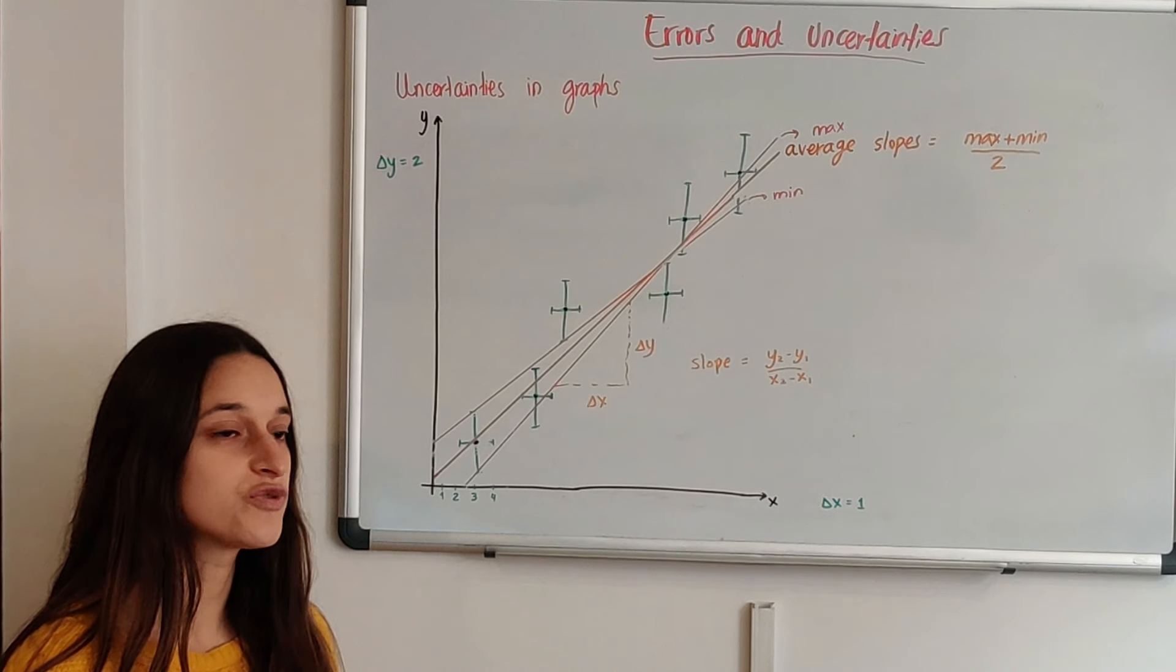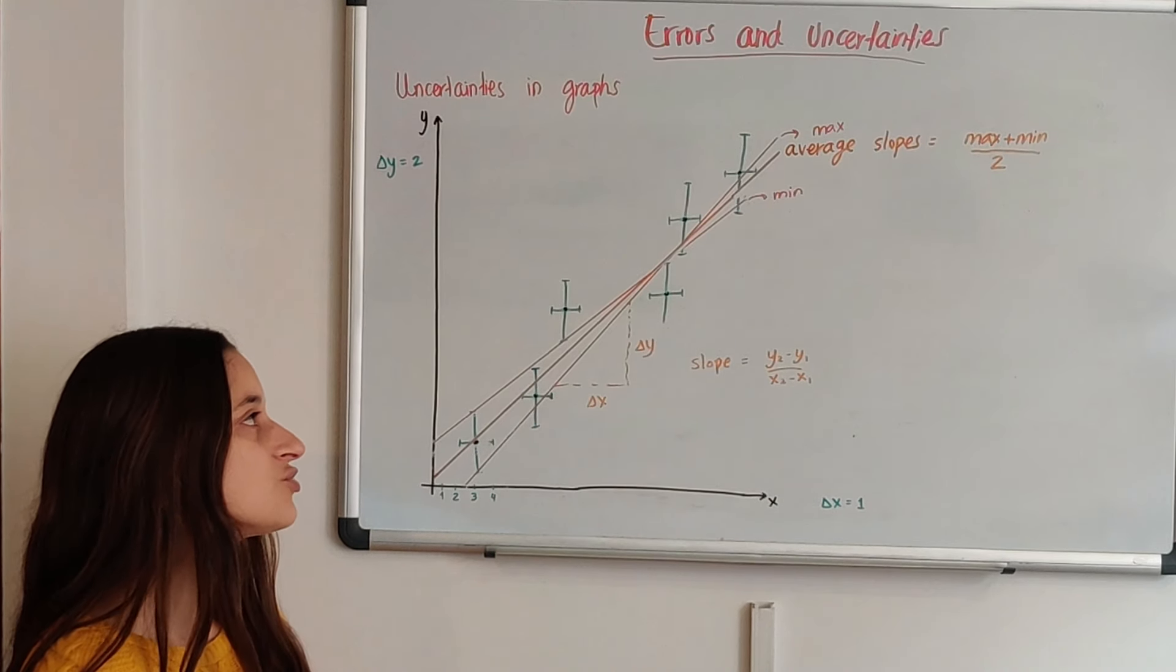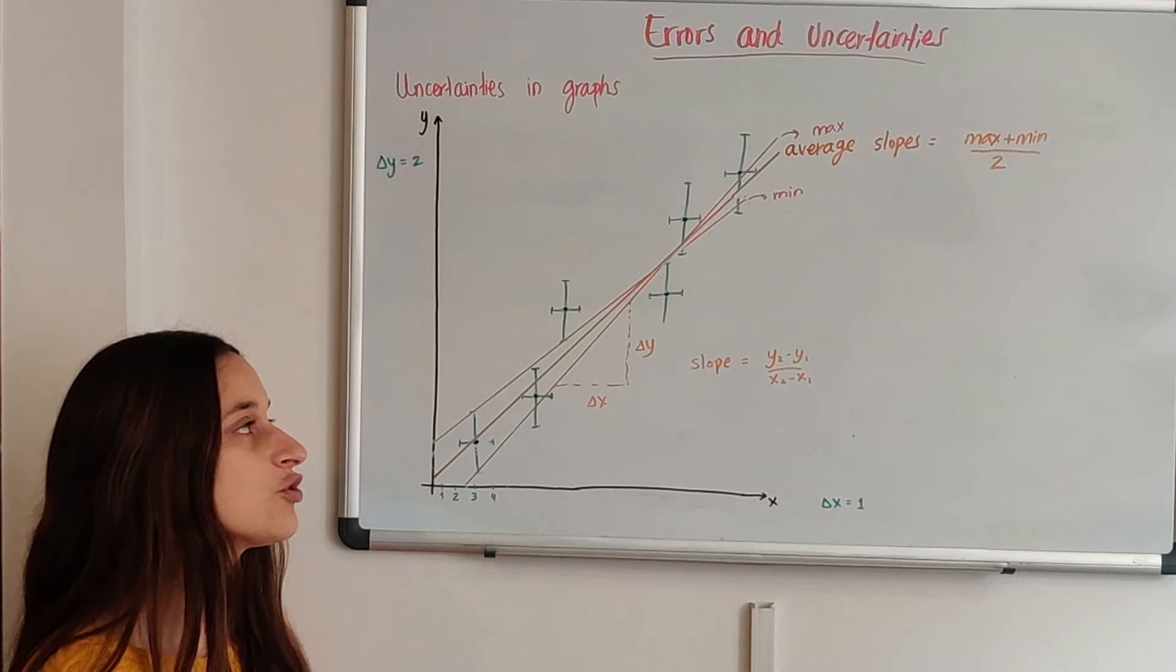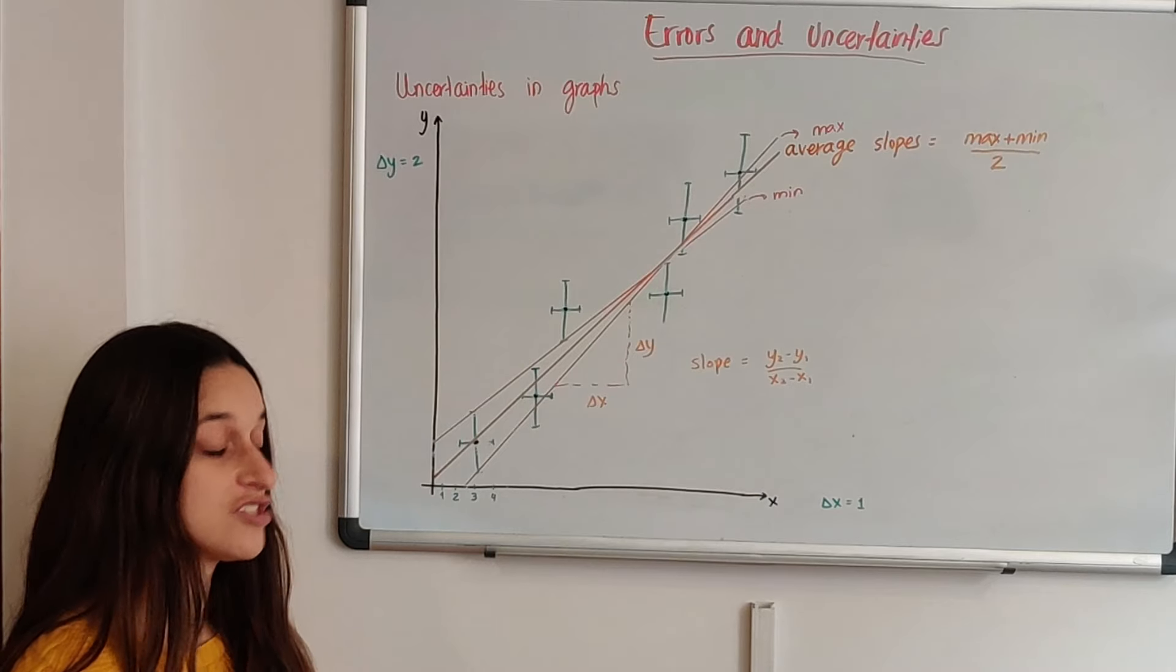So this procedure is really useful to just get the number that you want. And what's the uncertainty of that slope? Because of course you want to say everything in terms of uncertainties.